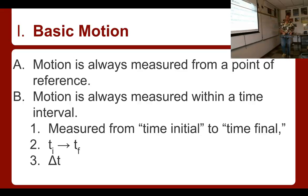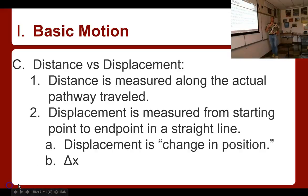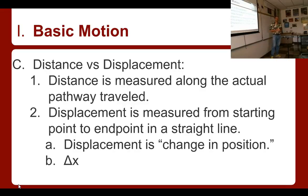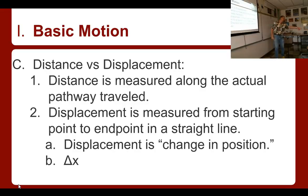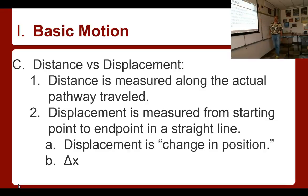There are two ways to measure how far motion goes. You can talk about how far something travels and care about its pathway — that's distance — or you can care only about the difference between start and end positions. When I ran home yesterday, I ran down the hallway, down to the office, across the parking lot, over the hill, and down my street. If you measure the actual pathway, it's 1.4 miles — that's the distance.